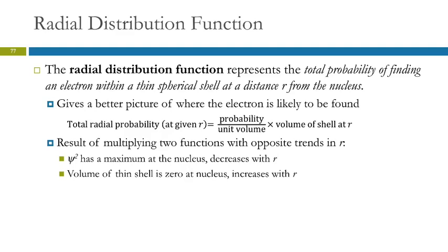So radial distribution is what does work. It's the total probability of finding an electron within a thin spherical shell at a distance r from the nucleus. This gives us a better picture. So the total radial probability at a given radius equals probability over unit volume times the volume of the shell at that radius.